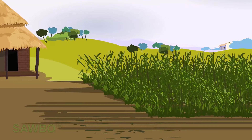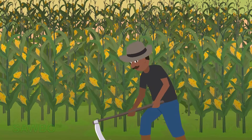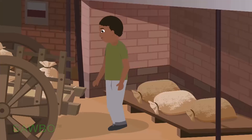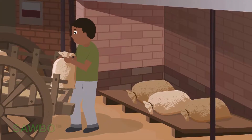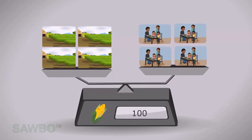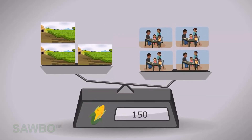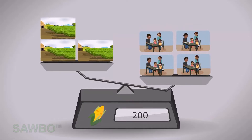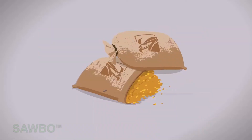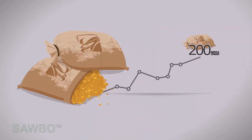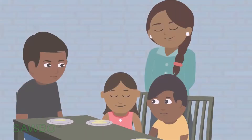A new growing season of maize arrives, and it doesn't rain much, so the maize harvest is poor. Maize consumption continues steadily, but there was not enough maize harvested to meet the demand. The maize price increases to 200 units per bag.